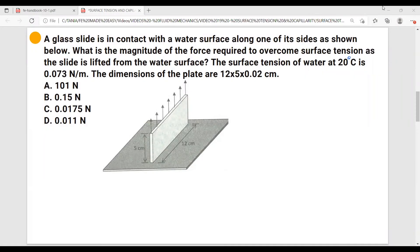Now let's move on with our example. A glass slide is in contact with a water surface along one of its sides as shown below. What is the magnitude of the force required to overcome surface tension as the slide is lifted from the water surface? The surface tension of water at 20 degrees Celsius is 0.073 newtons over meters. The dimensions of the plate are 12 by 5 by 0.02 centimeters.